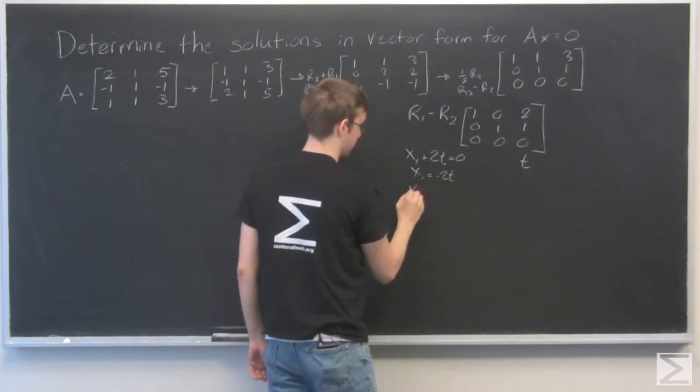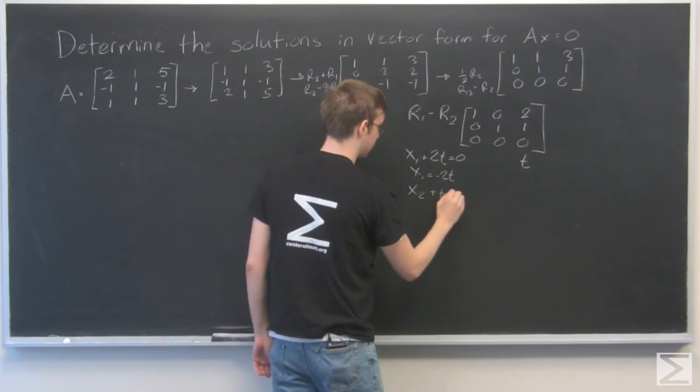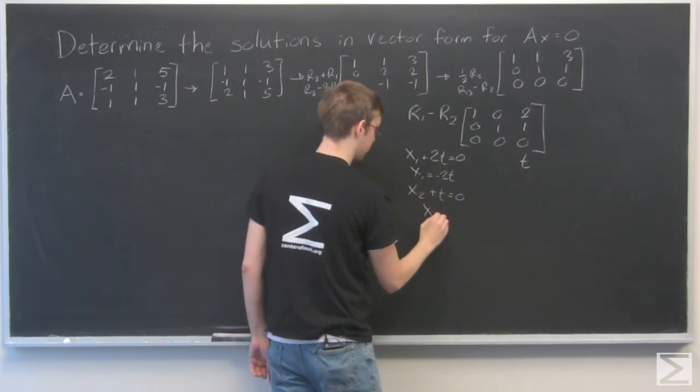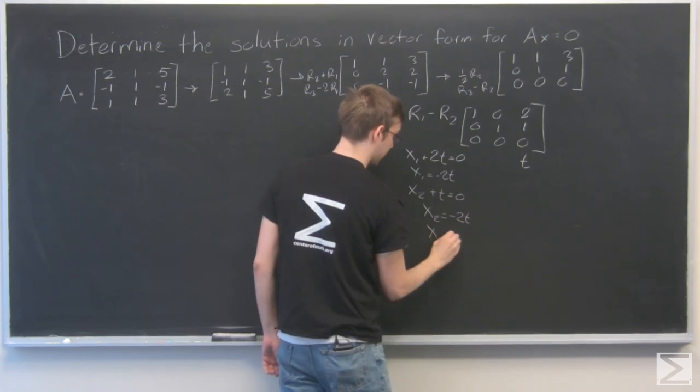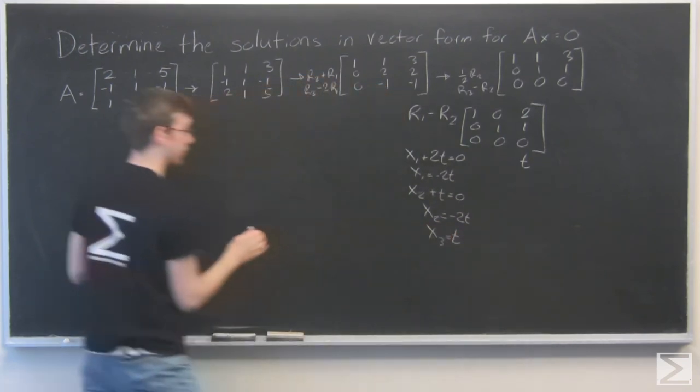My x2 plus t equals 0. So my x2 equals minus t. And my x3 equals t. So I'm going to move over here.